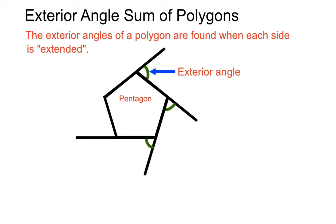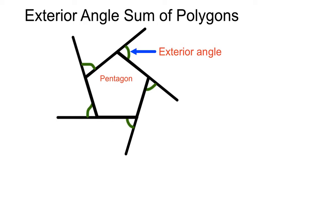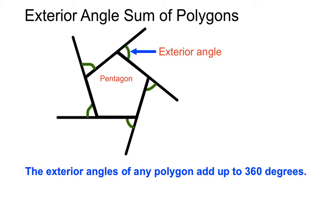You notice all those green angles here. We could call each of them exterior angles. And if we added all those up, we get a very special result. All of those green exterior angles that we've created there, they add up in any polygon to 360 degrees.